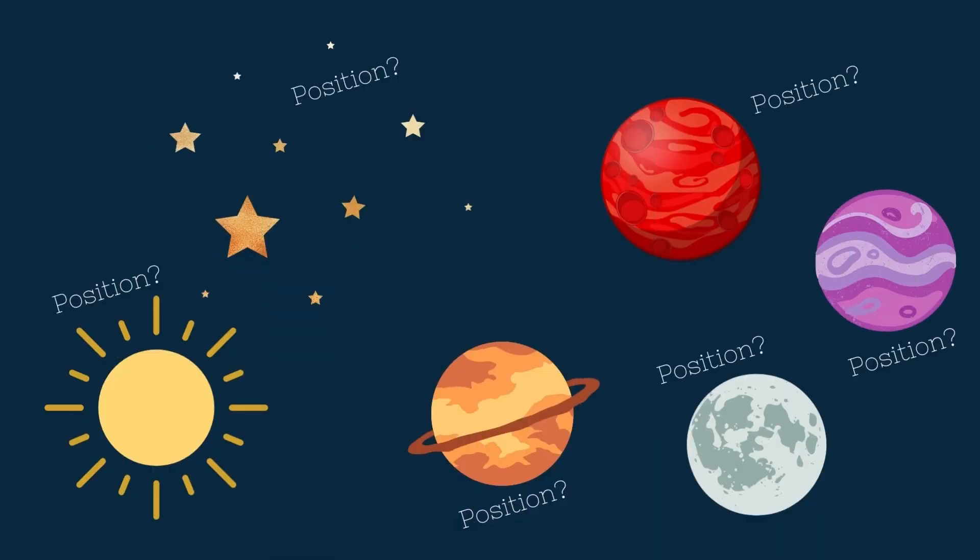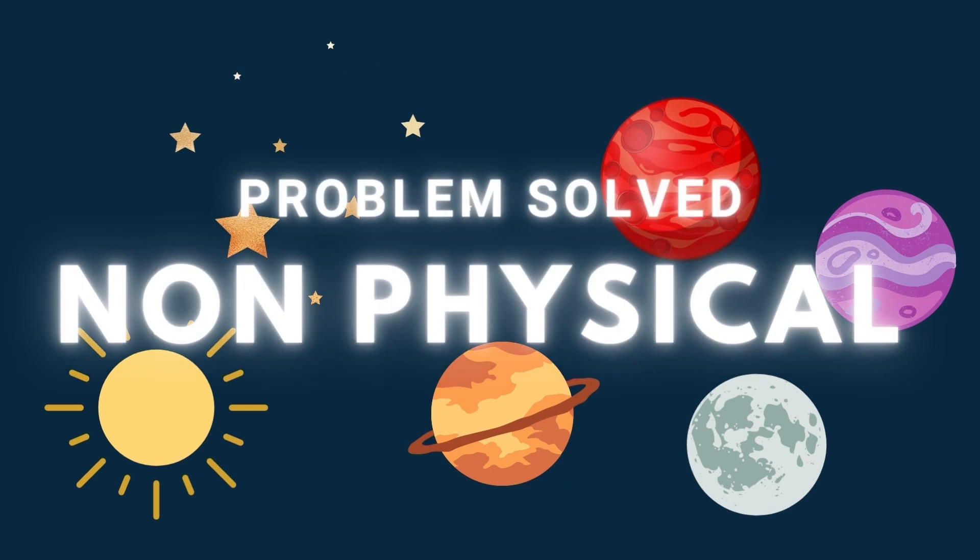This is why flat earthers are heavily insistent on the sun, moon, planets and stars being completely non-physical, so they never have to give them an exact location or altitude.